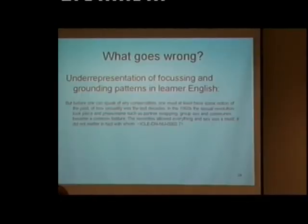One example of a learner sentence from the Louvain corpus: 'But before we can speak of any conservatism, one must at least have some notion of the past, of how sexuality was the last decades.' There are other errors here, of course, but we're not concerned with these. 'In the 1960s, the sexual revolution took place, and phenomena such as partner swapping, group sex, and communes became a common feature. The 70s allowed everything and sex was a must. It didn't matter, in fact, with whom.' You may have noticed that this sentence here is a bit infelicitous, and you might correct it by using a framing pattern.